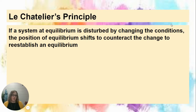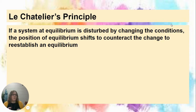Le Chatelier's Principle states that if a system at equilibrium is disturbed by changing the conditions, the position of the equilibrium will shift to counteract that change and reestablish equilibrium. You can think about it like a balance board you're trying to stand on, or a seesaw or teeter-totter.